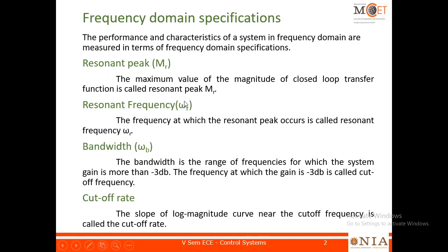The frequency at which this peak occurs is called resonant frequency, denoted by omega R. So two things: one is the frequency at which the maximum occurs, and the other is the maximum value of the magnitude. These two form the first and second specifications in frequency domain.